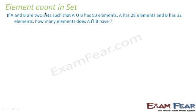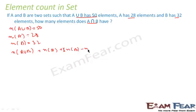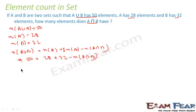Let's do an element count problem. The question says: N(A union B) is 50, N(A) is 28, and N(B) is 32. We have to find N(A intersection B). Using the formula: N(A union B) = N(A) + N(B) − N(A intersection B), we get 50 = 28 + 32 − N(A intersection B). Solving this, N(A intersection B) equals 10.